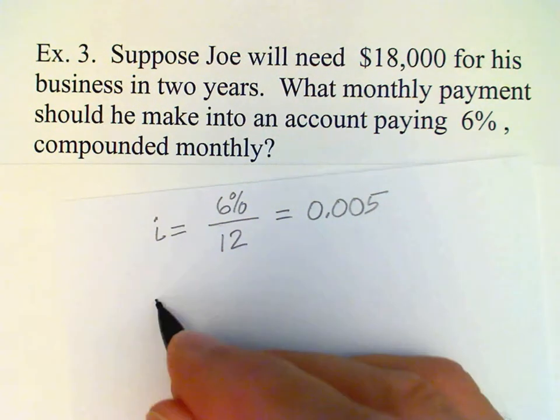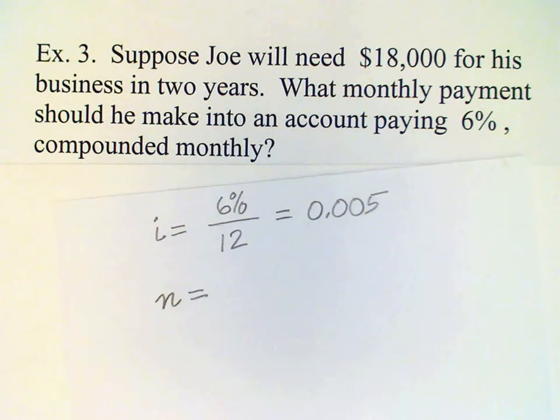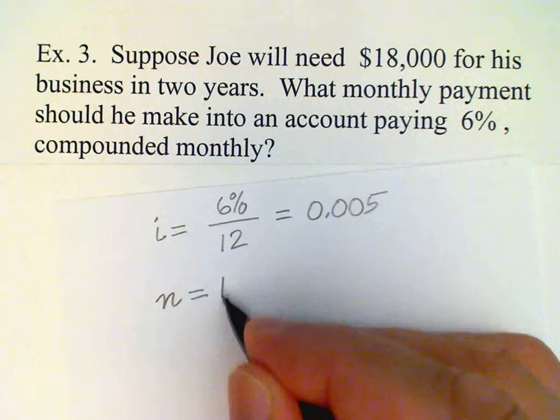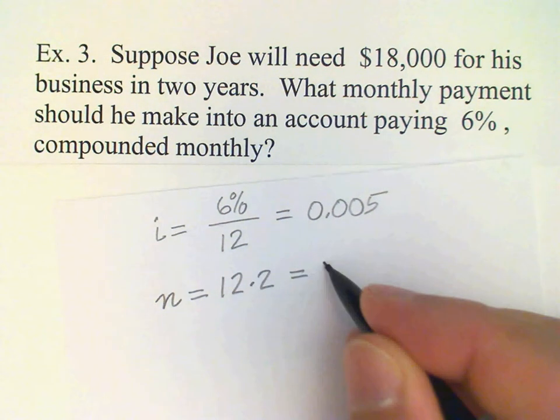And then n, you remember, is going to be the number of periods, in this case the number of months in two years. 12 months in a year so 12 times 2 is 24.